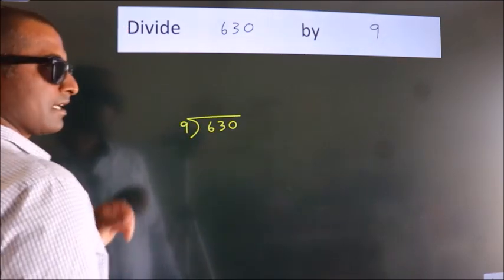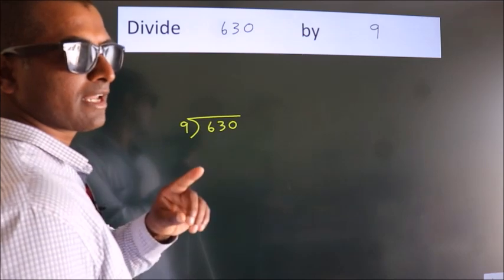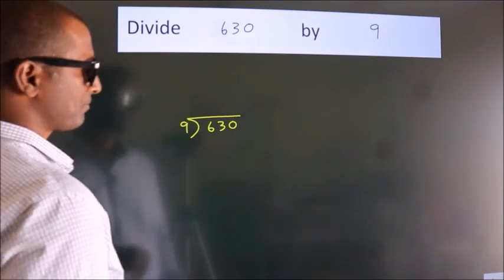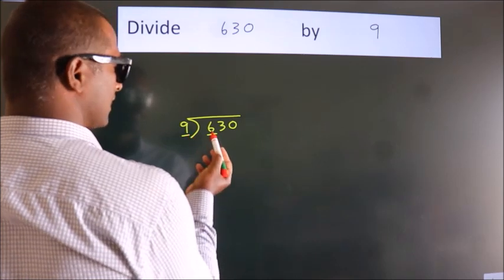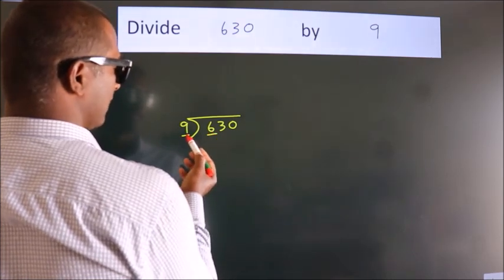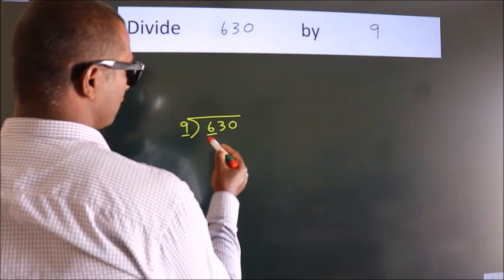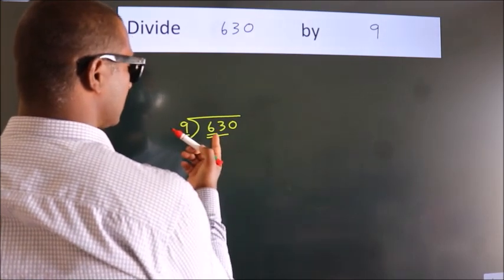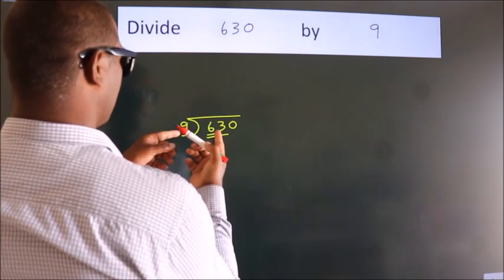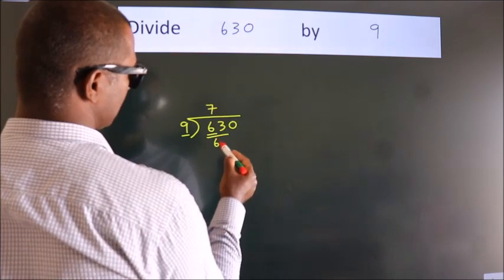This is your step 1. Next, here we have 6. Here 9. 6 smaller than 9. So, we should take two numbers. 63. When do we get 63? In 9 table. 9 7s, 63.